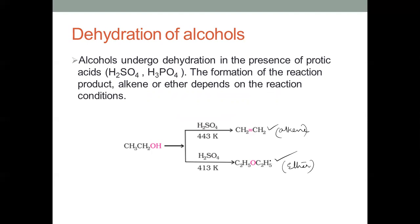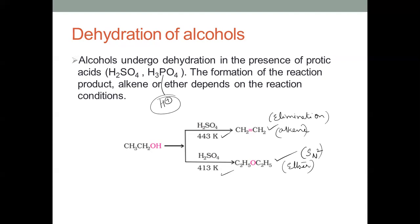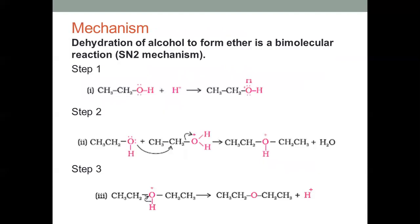If the temperature is maintained correctly, synthesis of ether is possible. When alcohols are dehydrated in the presence of protic acids such as sulfuric acid or phosphoric acid — acids that can give H⁺ — at 443 K, an alkene is formed. At 413 K with the same reagent, an ether is formed. The mechanisms differ: 443 K gives elimination, while 413 K gives an SN2 substitution reaction.